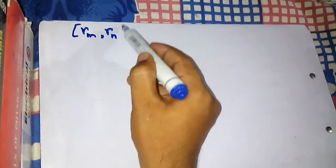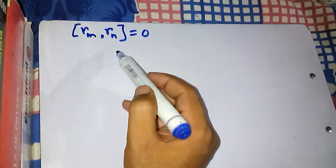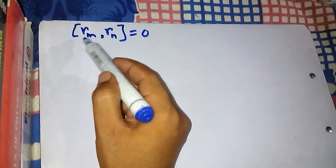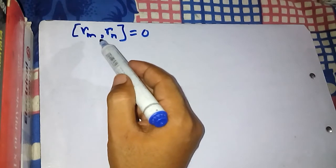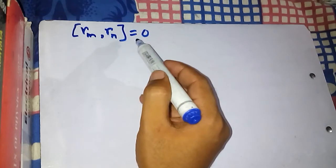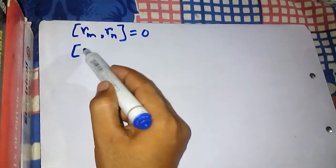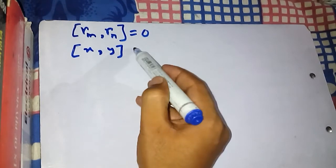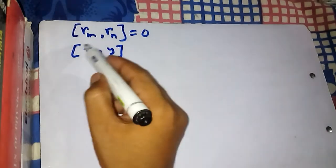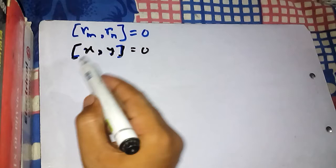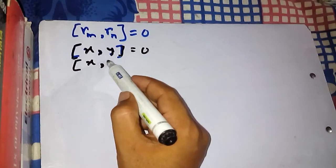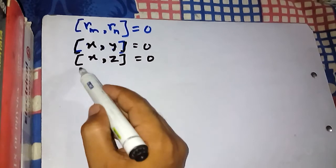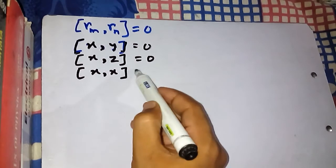The commutation of two position operators [rm, rn] is always equal to zero. It doesn't matter which components you take — the commutation relation will give you zero. For example, [x, y] is zero, [x, z] is zero, and [x, x] is also zero.